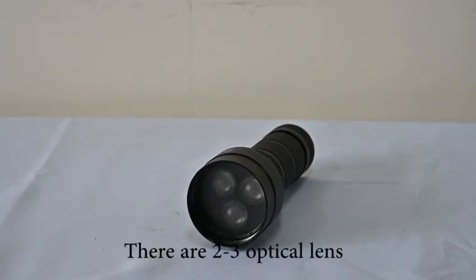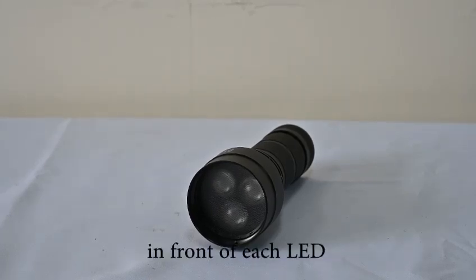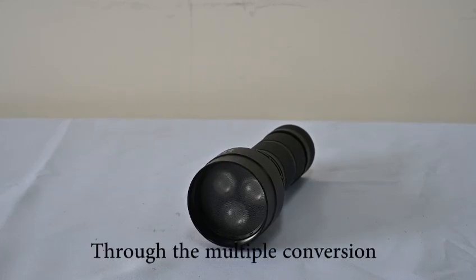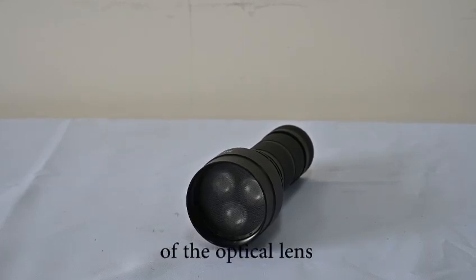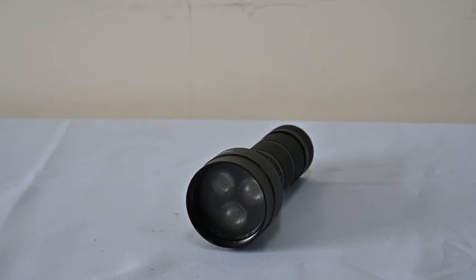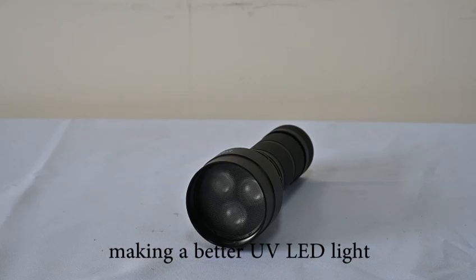There are 2 to 3 optical lenses in front of each LED, totally 4 sets of modules. Through multiple convections of the optical lens, we can artificially adjust the UV intensity, making better UV LED lights.